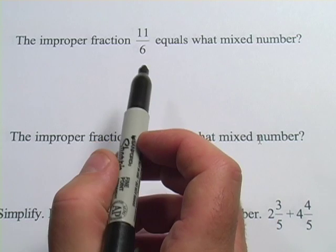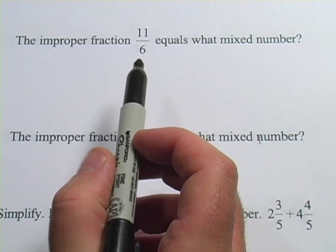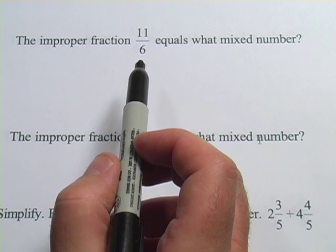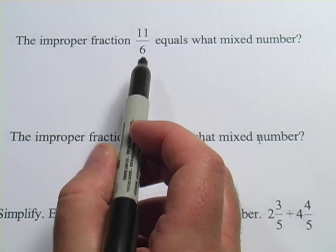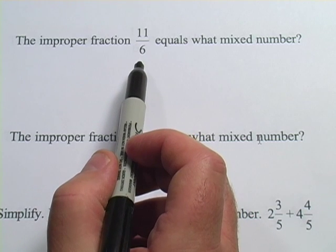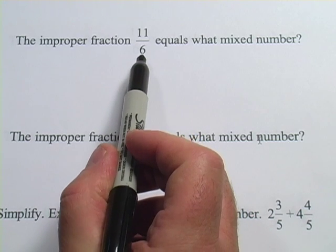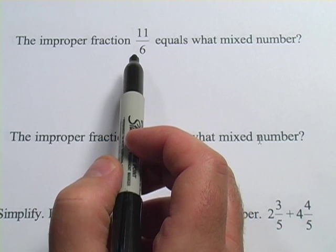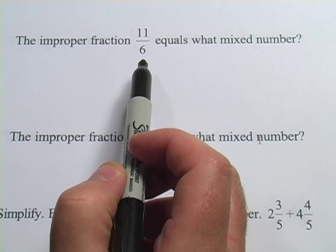An improper fraction is like this one here. What makes it improper is that the numerator, 11 up here, is bigger than the denominator, 6. And I guess we call that improper because usually we think of using a fraction to represent a number that's smaller than 1, and anything where the numerator is bigger than the denominator is bigger than 1. So this is really 1 and some other fraction.